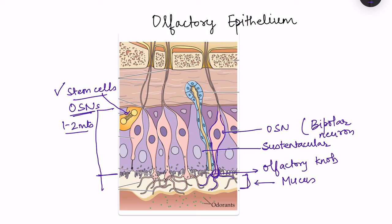Finally, we also have Bowman's glands, which are present in the olfactory epithelium and are responsible for secreting the mucus that lines the olfactory epithelium.